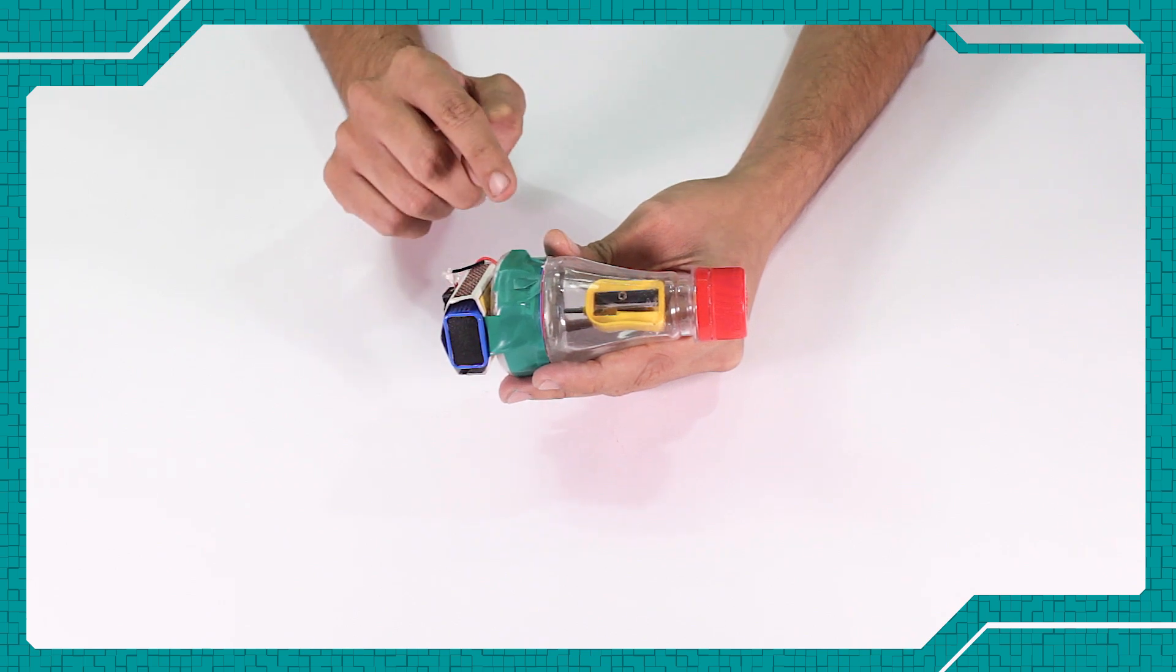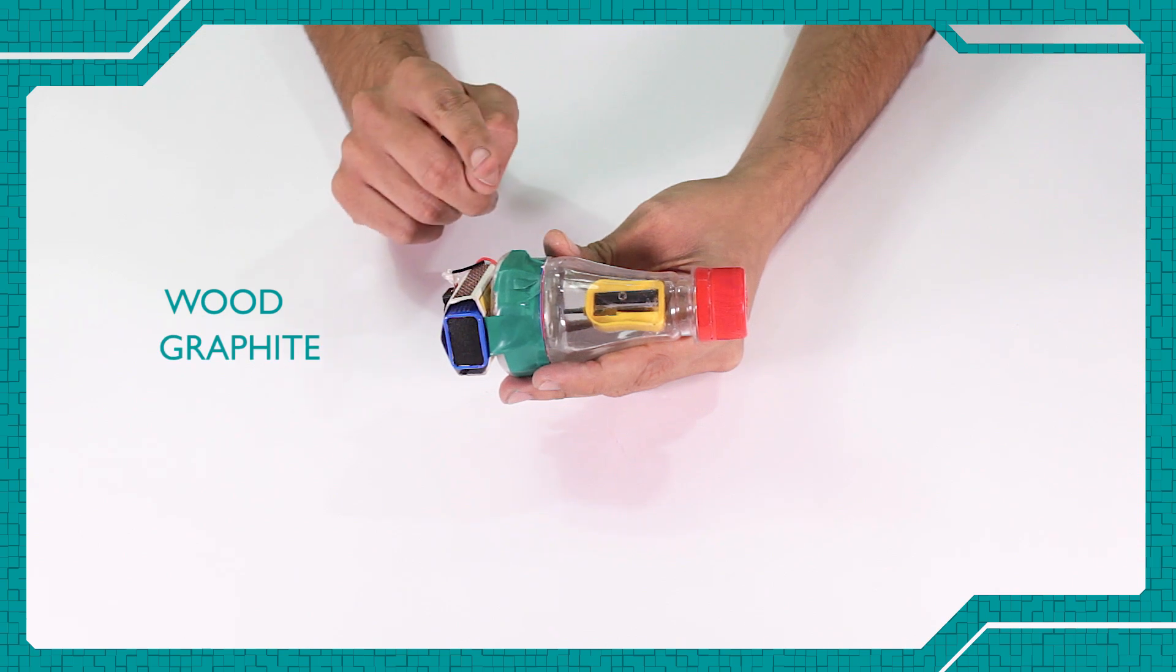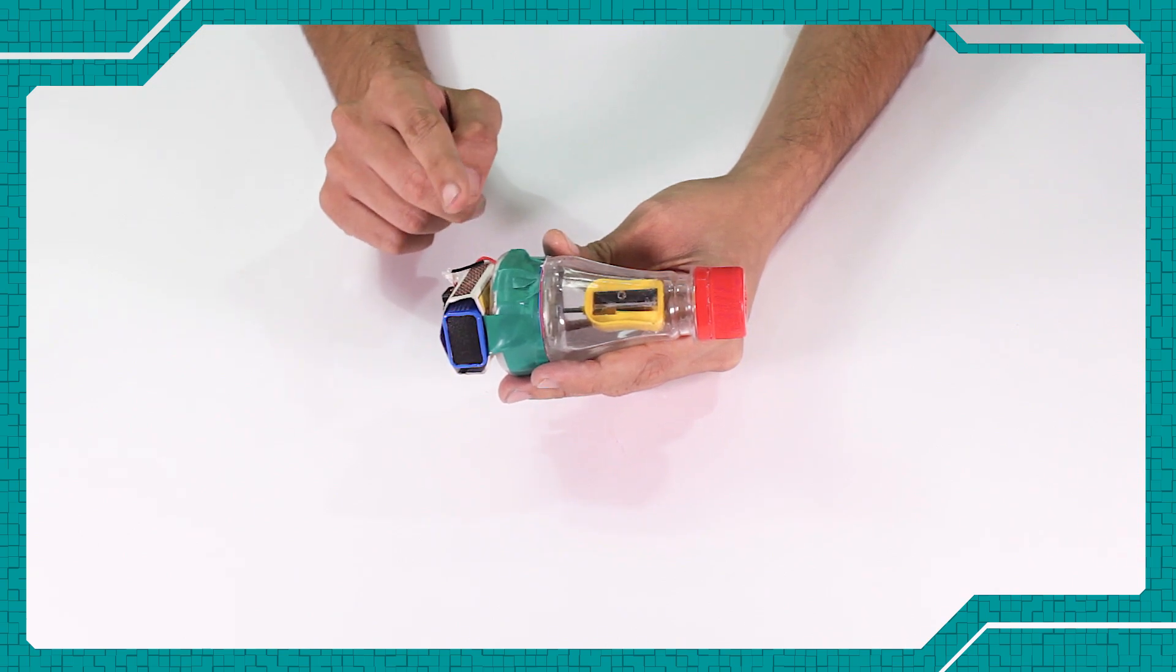This angle gives the pencil its pointy shape. The blade then shaves off the wood and the graphite of the pencil until the pencil is ready to write. Wasn't that fun?